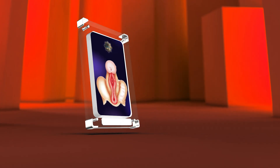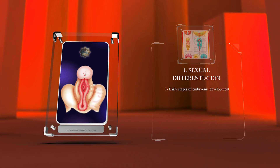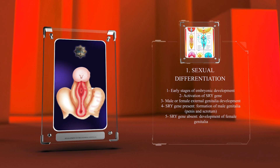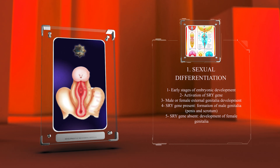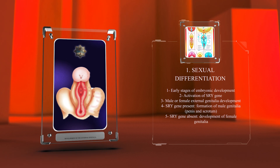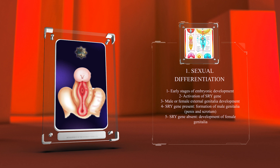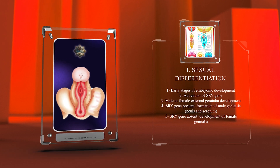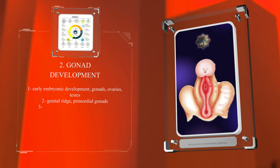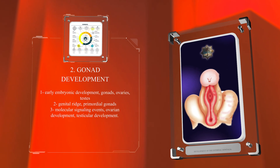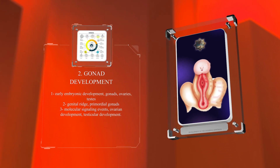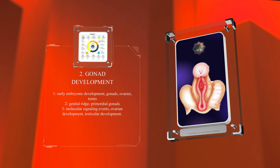In the early stages of embryonic development, the activation of a specific gene called SRY determines whether an individual will develop male or female external genitalia. If the SRY gene is present, a series of molecular events occurs, leading to the formation of male genitalia such as the penis and scrotum. If the SRY gene is absent, female genitalia will develop instead. The genital ridge develops and gives rise to primordial gonads, whose fate is determined by specific molecular signaling events that either lead to ovarian or testicular development.